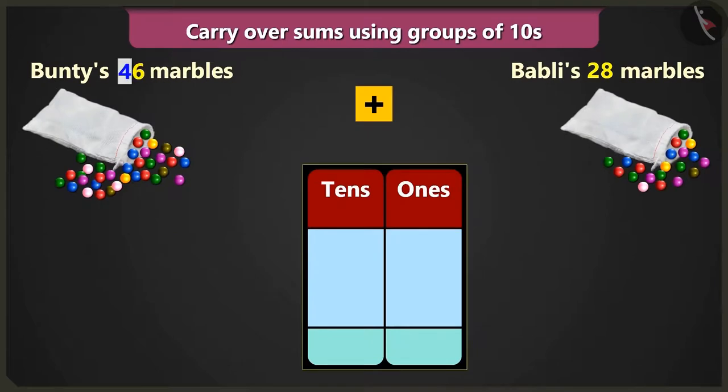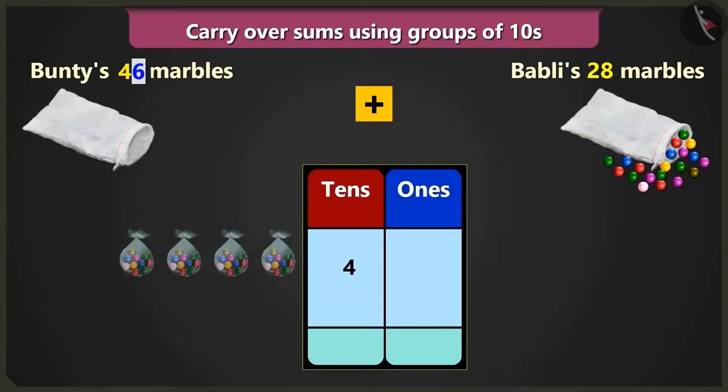I have 4 tens and 6 ones, 46 marbles. So we will write 4 in the box of tens and 6 in the box of ones. Yes, and I have 2 tens and 8 ones.